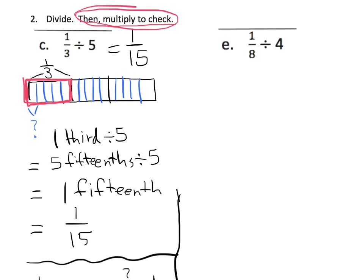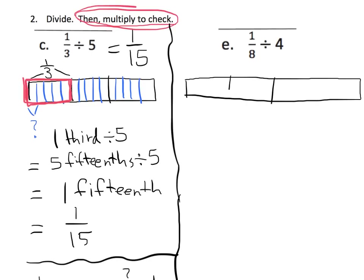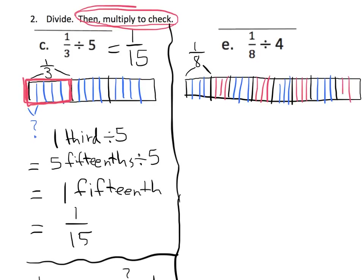Let's do the next problem: one-eighth divided by four. I have to begin by drawing a whole and cutting it into eight pieces — there's my one-eighth. Now I have to cut each of those eighths into four pieces. Students should be able to see the pattern: if you have eight-eighths and each eighth is cut into four pieces, you're going to have thirty-seconds — thirty-two individual tiny little pieces. We want to know the size of one of those pieces, which is one-thirty-second.